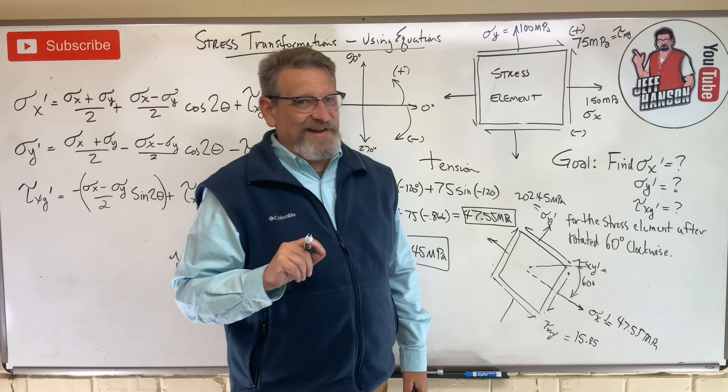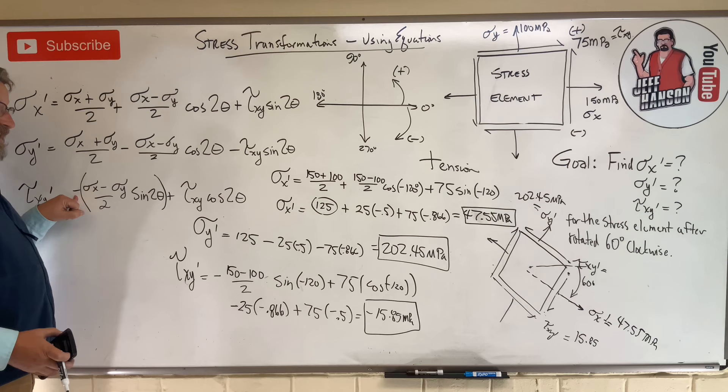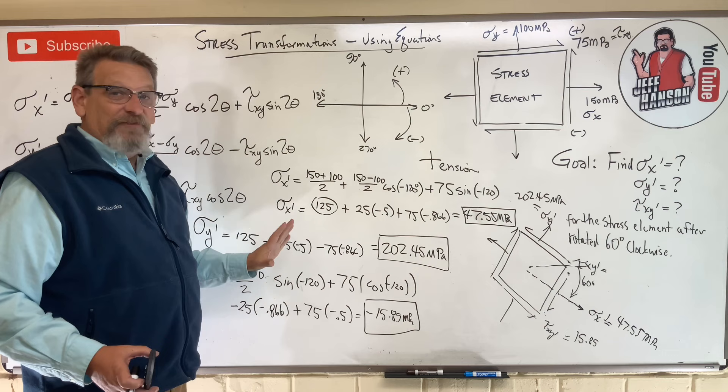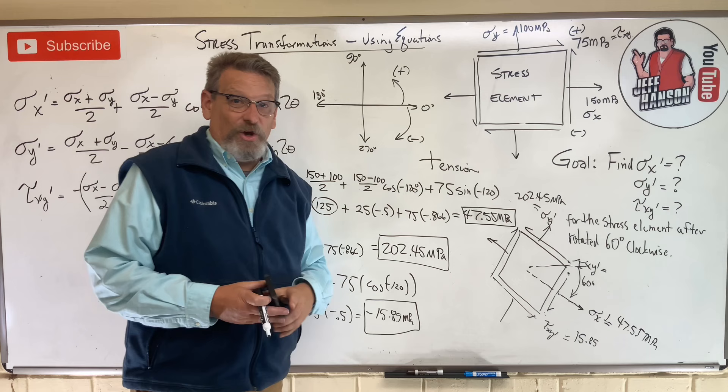In the next video I'll show you how to find where tau xy equals zero. That's all there is to plugging into these equations. It's easy to mess up — forgetting the negative sign, or forgetting that clockwise rotations are negative angles. The graphical method, Mohr's circle, eliminates all these errors. I hope that helps, and I'll see you in the next video.